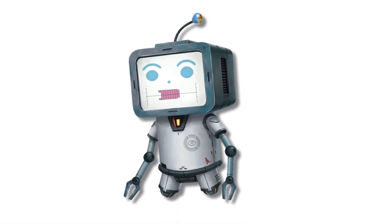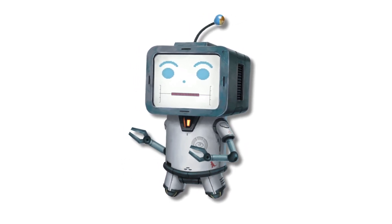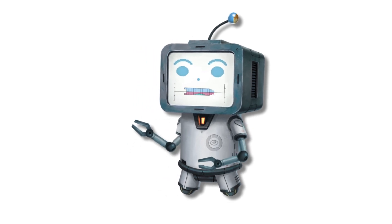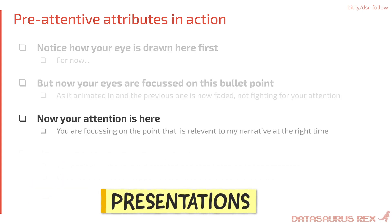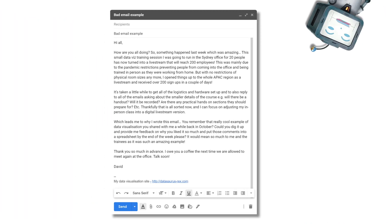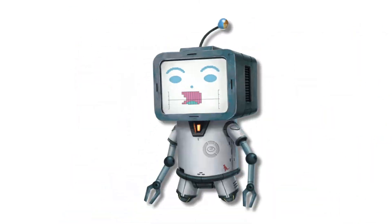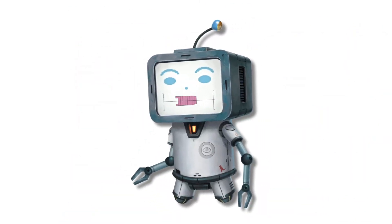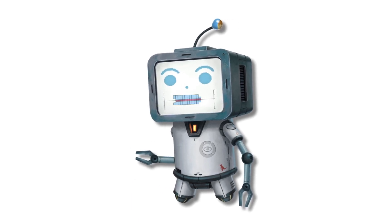And now you know the perils of data puking, how to spot audience symptoms, and how to avoid doing it in the future. These techniques can be applied to many common visual communications, such as presentations, emails, and data visualizations — helping you to help your audience pay attention and quickly find the right insights on the screen, making your narrative super effective.